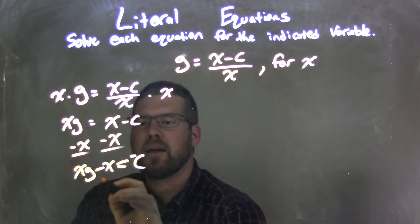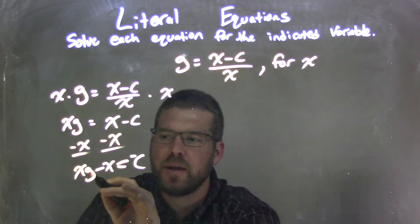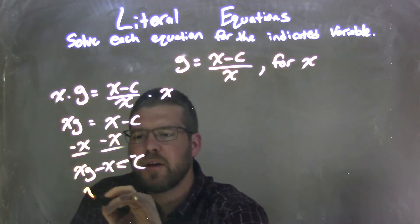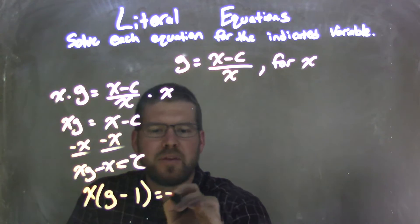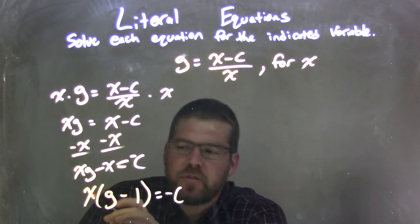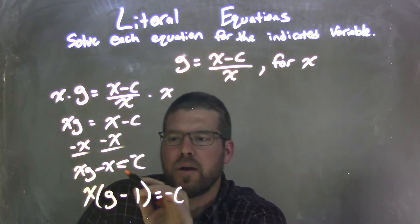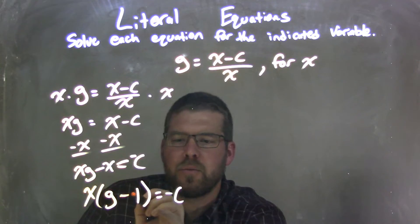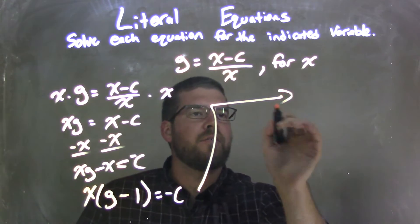What happens if I can pull out an x from both parts? If I can pull out an x from both parts here, the x times g and the minus x, I'm left with x times parentheses g minus 1 equals negative c. If I distribute that x back across, x times g is xg, and x times 1 is x, with subtraction in between. I'm going to rewrite this over here.